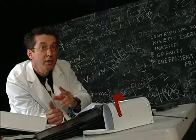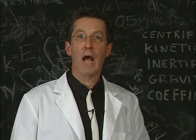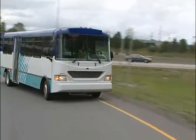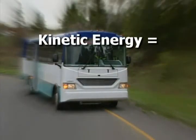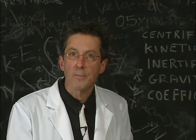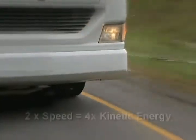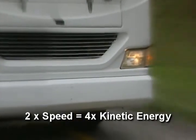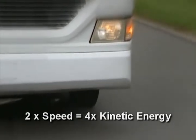Grab another piece of pizza while I clarify the situation. There are five big factors that determine how easy or not so easy it is to maneuver your transit bus. We've already covered centrifugal force. Now let's talk about kinetic energy. Kinetic energy is a combination of weight, speed, and motion. So as a 20,000 to 30,000 pound bus goes through a curve, it's got kinetic energy out the wazoo. Every time you double your speed, you quadruple your kinetic energy. A bus going 30 miles per hour has four times as much kinetic energy as a bus at 15 miles per hour.